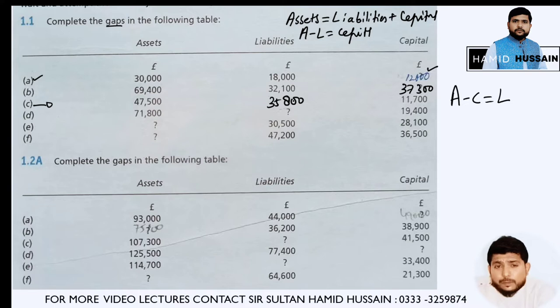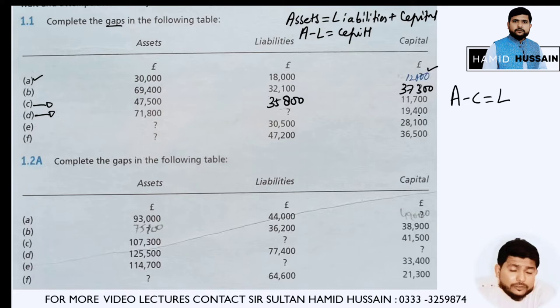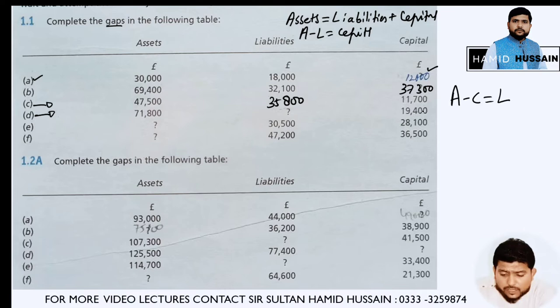In question 1.1 part D, assets are 71,800 and capital is 19,400. You need to subtract capital from assets: 71,800 minus 19,400, and you will get 52,400.